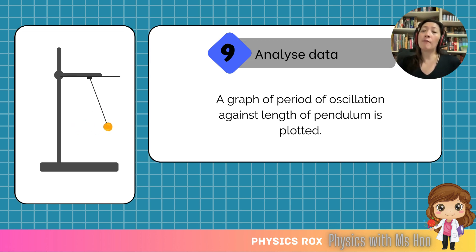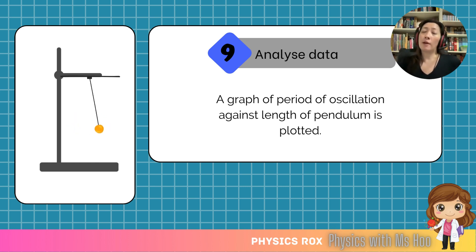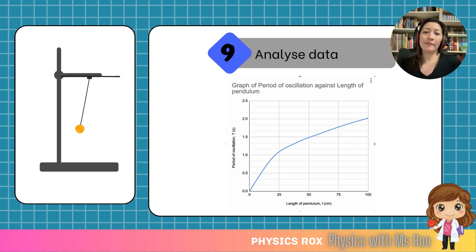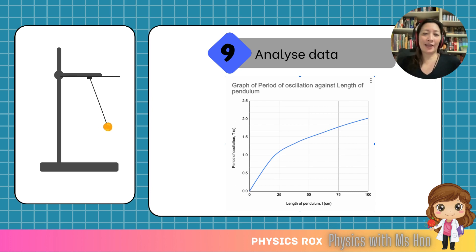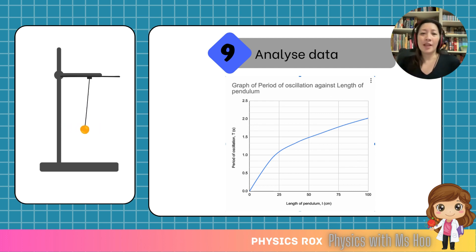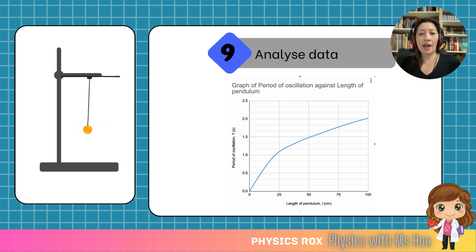We're going to draw a graph of period of oscillation against length of pendulum. When plotting a graph, normally the responding variable goes on the y-axis and the manipulated variable goes on the x-axis. Here's a simplified graph that I have plotted — for students, you should use actual graph paper and draw it with a pencil. As you can see, the data curves upwards.